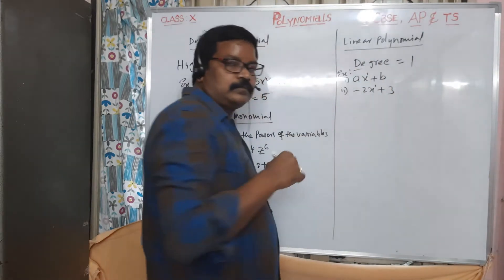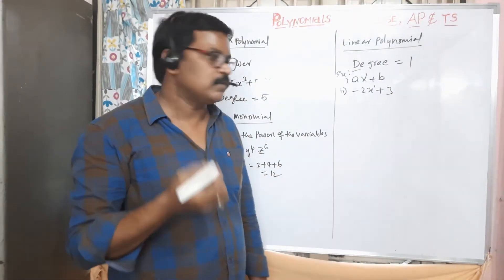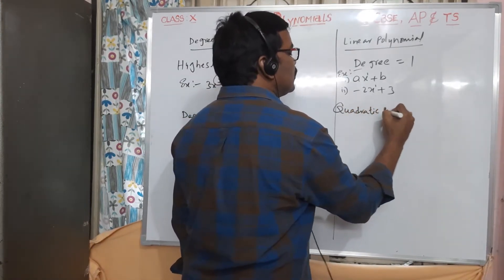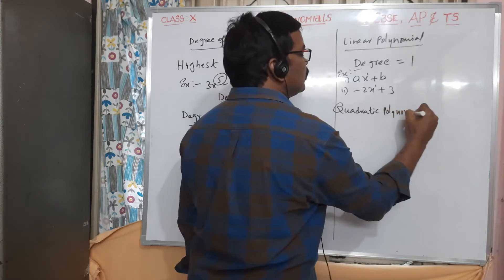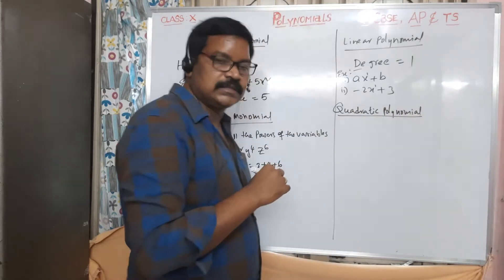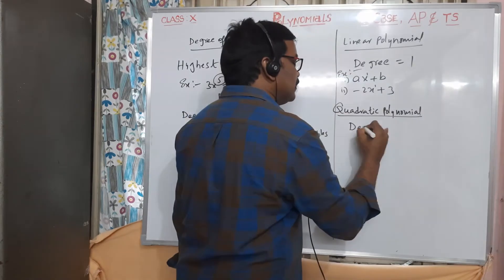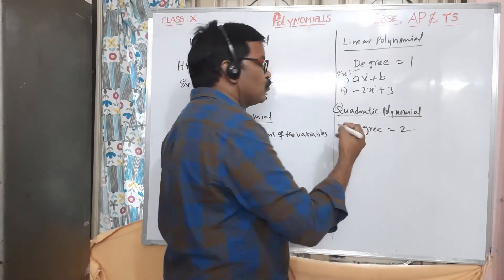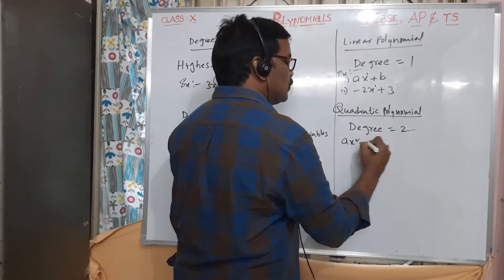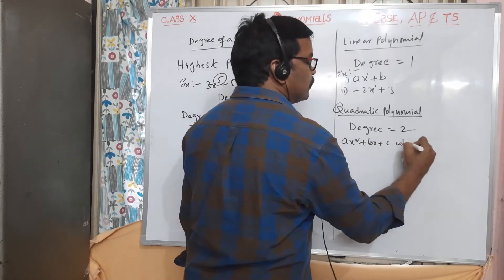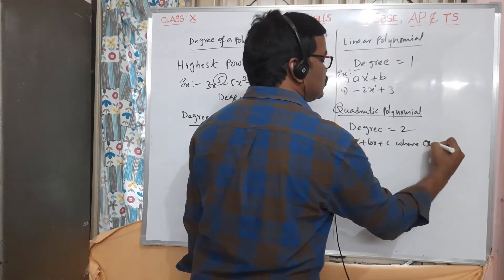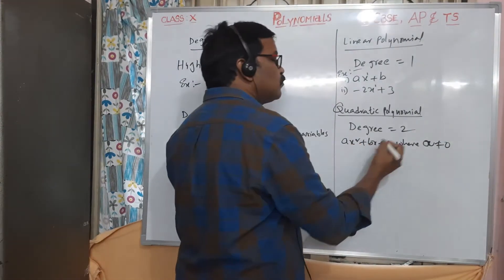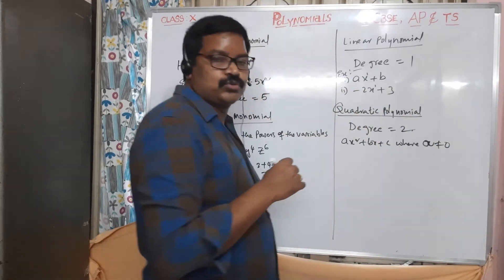A quadratic polynomial is a polynomial whose degree is equal to 2, of the form ax² + bx + c, where a ≠ 0. The degree of a quadratic polynomial is 2.